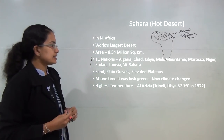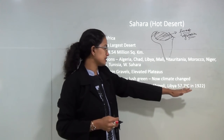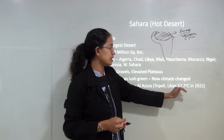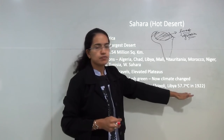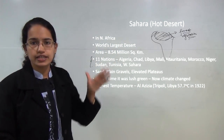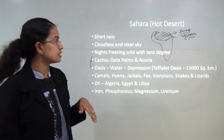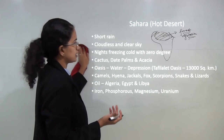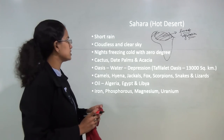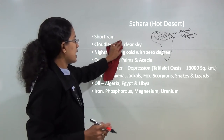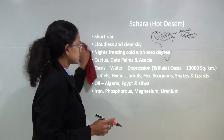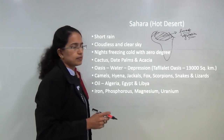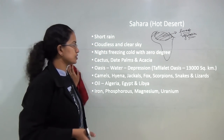In the Sahara desert, in 1922, the highest temperature was recorded at Al-Aziziya in Tripoli, Libya, which was 57.5 degrees Celsius — the highest temperature ever recorded in the world at that time. This region definitely has short rainfall, which is a major characteristic of desert areas. The sky is cloudless and clear, and nights are freezing cold with temperatures reaching up to 0 degrees.